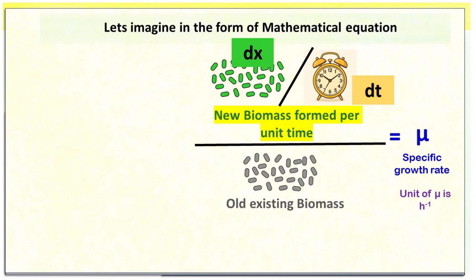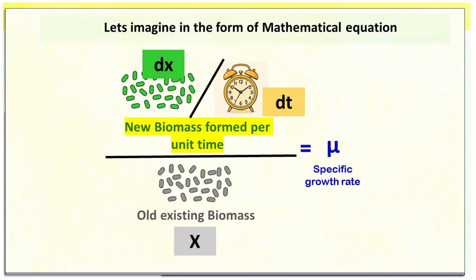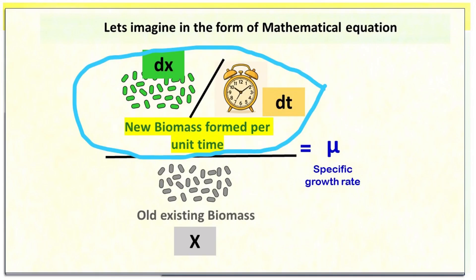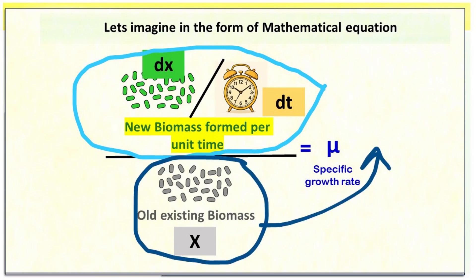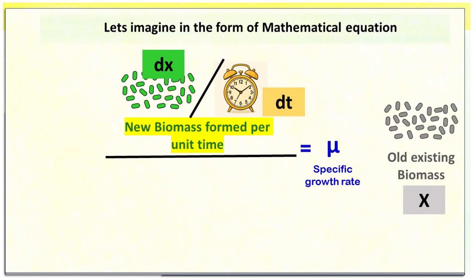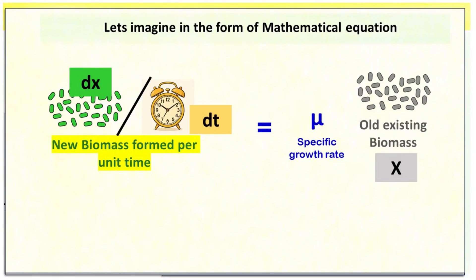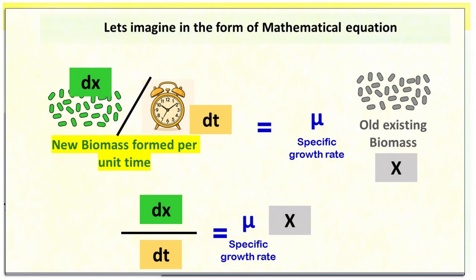Representing the existing biomass by the letter x, if we are interested in the term dx/dt, then the equation becomes: dx/dt is equal to mu times x. This term tells us how much new biomass is forming per unit time.